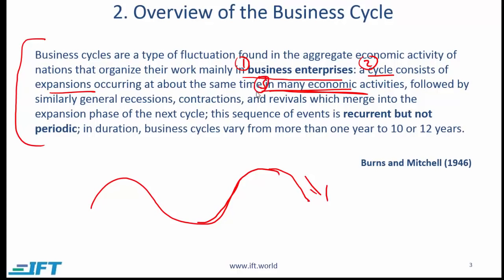The fourth point is that the sequence of events is recurrent but not periodic. Recurrent means the cycles repeat — the economy improves, then declines, then improves again. Not periodic means the intensity and duration are not necessarily the same each cycle. If cycles were periodic, intensity and length would always be the same, but that is not the case. Make sure you are on top of these four points.